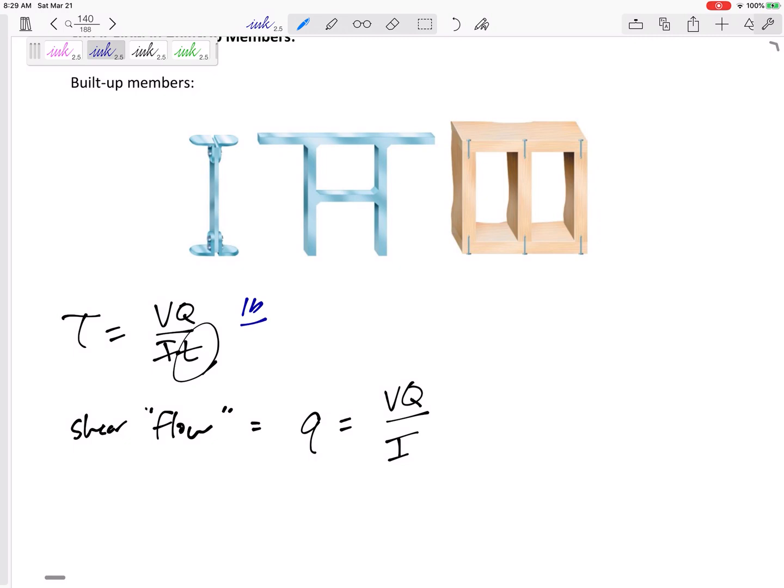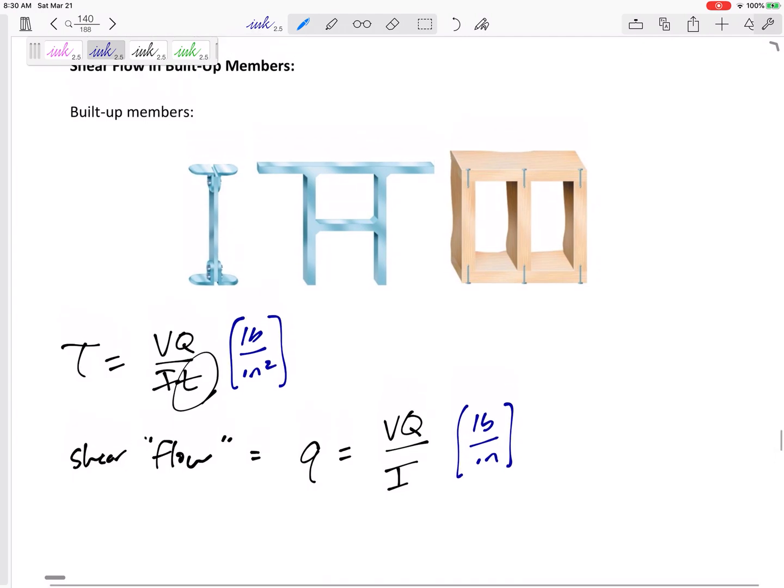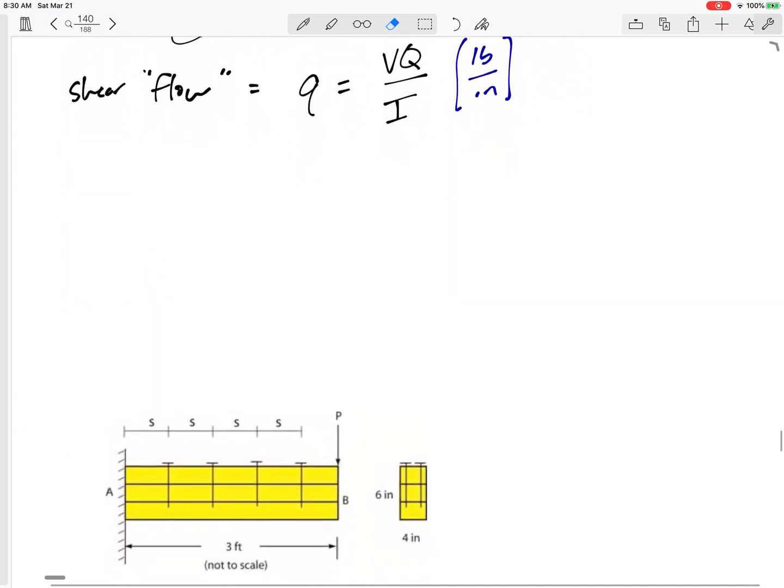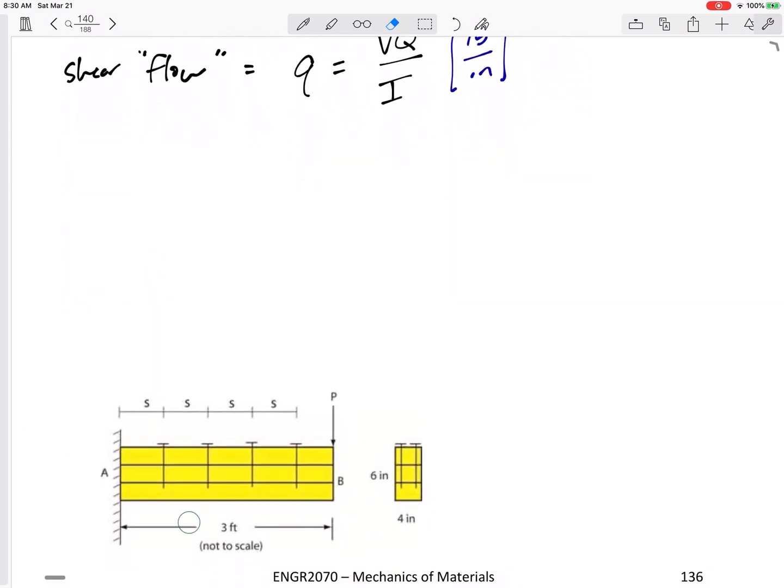The units here, this was pounds per inch squared over here. This is just pounds per inch. So it's really how many pounds of shear force per inch we have in the longitudinal direction. So here's where we're going to use this.